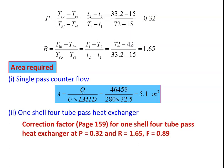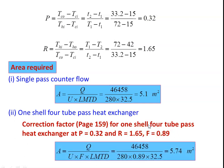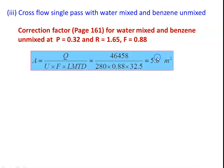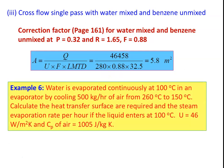For the one shell four tube pass configuration: from page 159 with P = 0.32 and R = 1.65, correction factor F = 0.89. Area = Q/(U × F × LMTD) = 46,458/(280 × 0.89 × 32.5) = 5.74 m². For the cross flow heat exchanger with water mixed and benzene unmixed: from page 161, F = 0.82. Area = Q/(U × F × LMTD) = 5.8 m². The three cases thus require 5.1, 5.74, and 5.8 m² respectively.